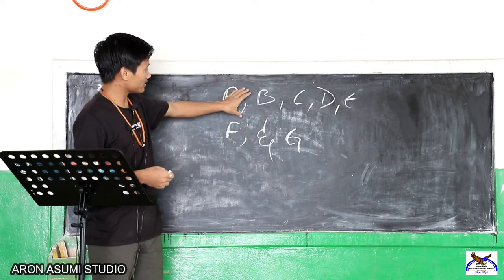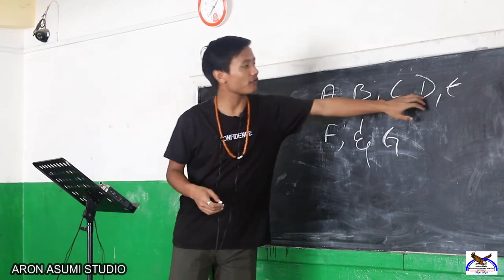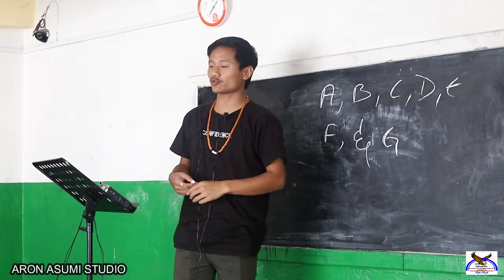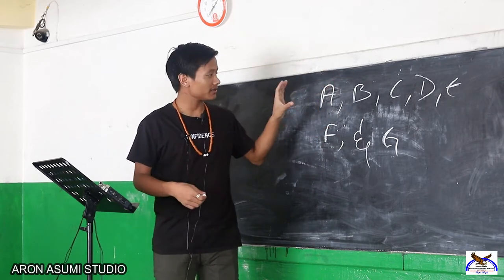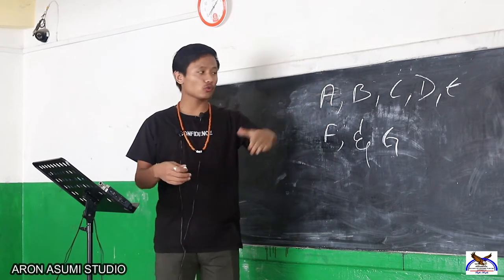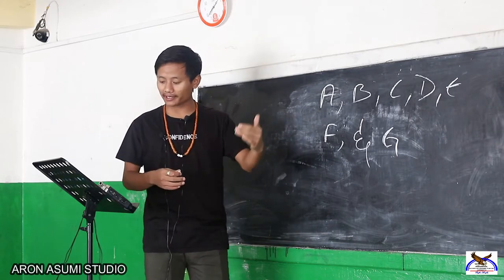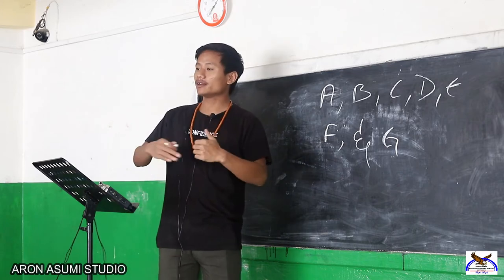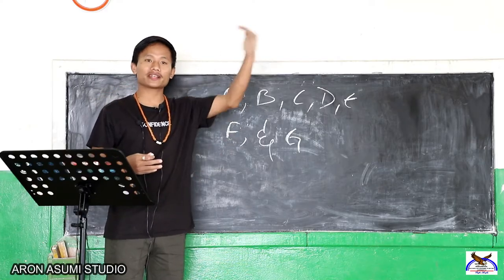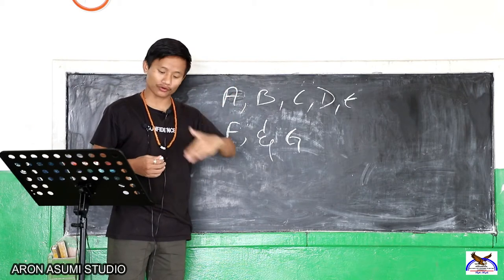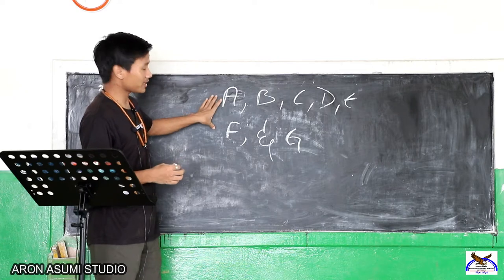These are the fundamentals — the basics you should know. There are only 7 alphabets you will be using, and when I say you will be using only these, it means you will keep on using them repeatedly as the music rises or lowers through the octaves. That is how it works — that is the first thing about music: the alphabets.